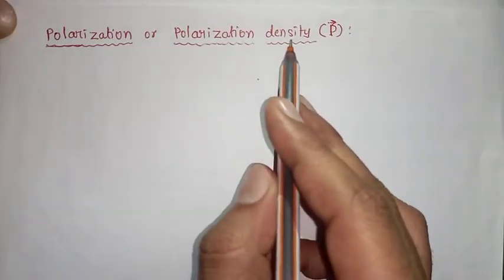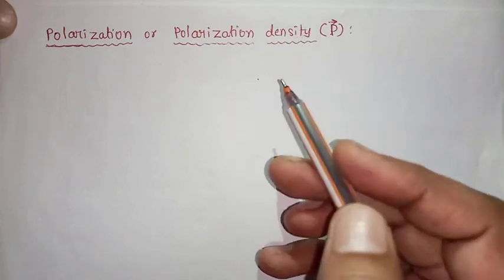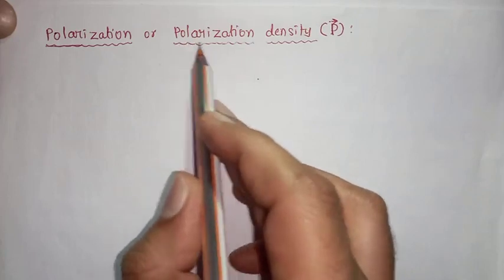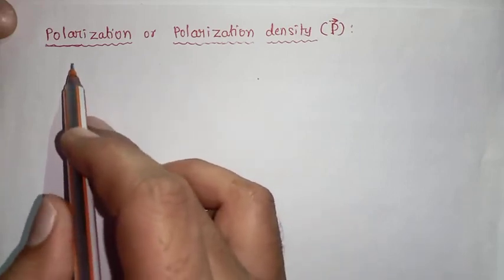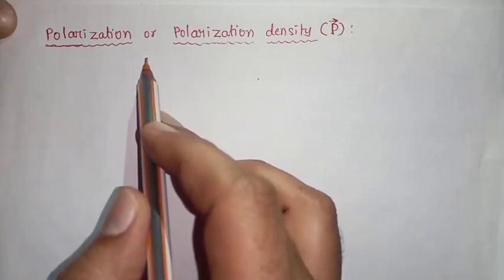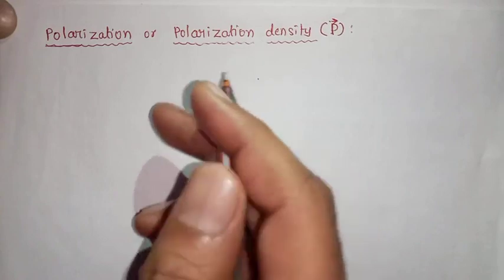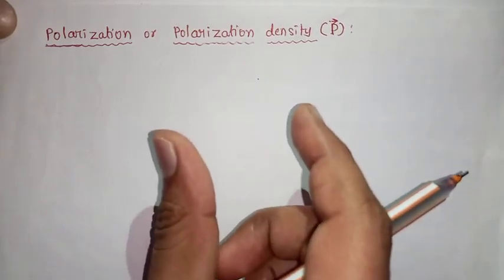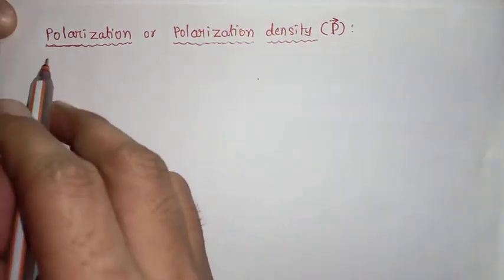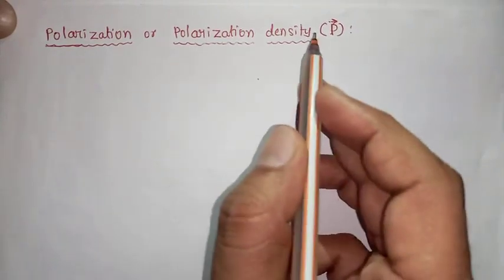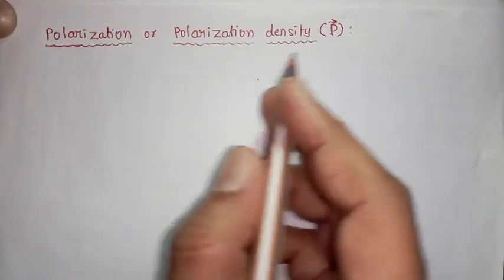Polarization or polarization density. Normally density means mass per unit volume. Similarly, polarization density relates to dipole moment per unit volume. We already know that a dielectric, either polar or non-polar, if we keep it in an external electric field, it will develop a net dipole moment. The net dipole moment developed per unit volume in the dielectric is called polarization or polarization density.